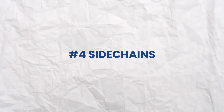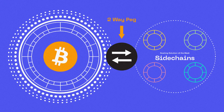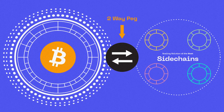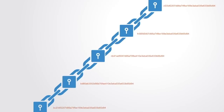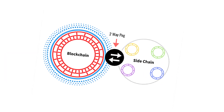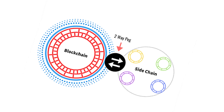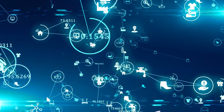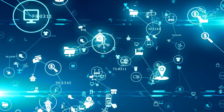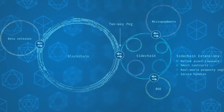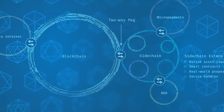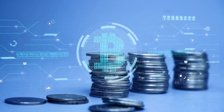Number four: sidechains. A sidechain is a separate blockchain that is connected to a primary blockchain. It runs in parallel, allowing entries from the primary blockchain to be linked to and from it. Sidechains operate independently of the primary blockchain and may use different methods of record keeping or consensus algorithms. They enable the primary blockchain to offload transactions and use cases to a secondary chain without compromising the primary chain's performance or security.